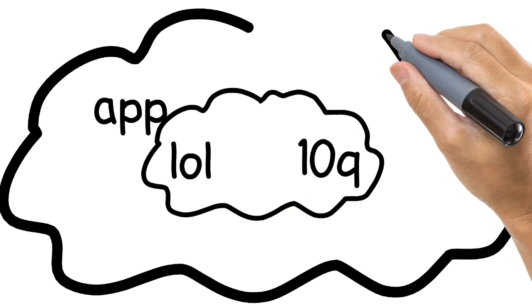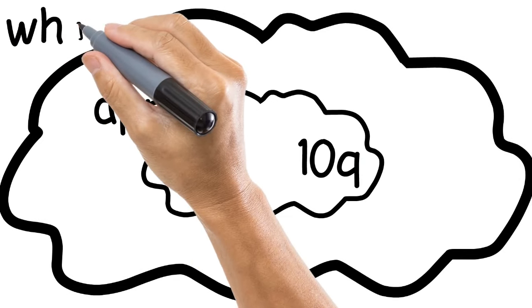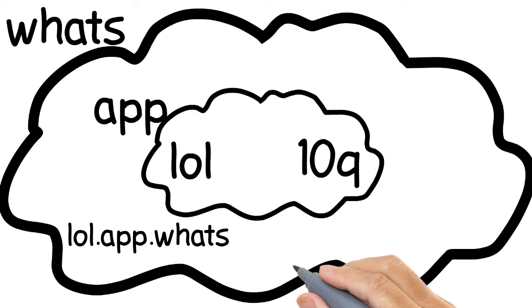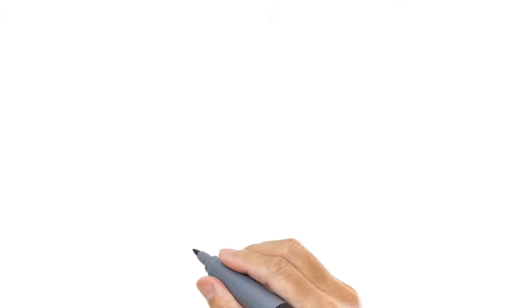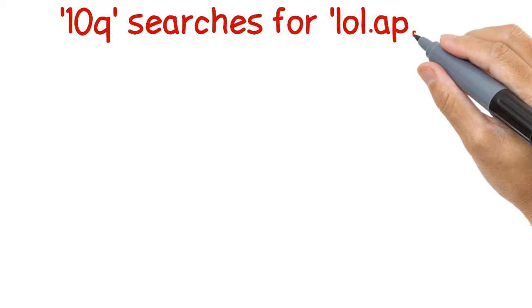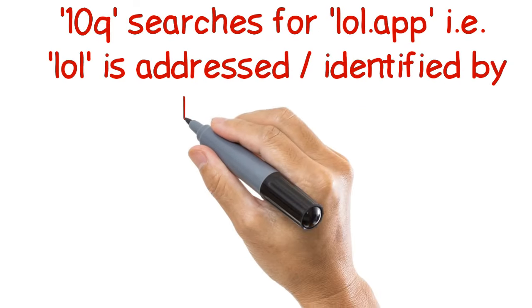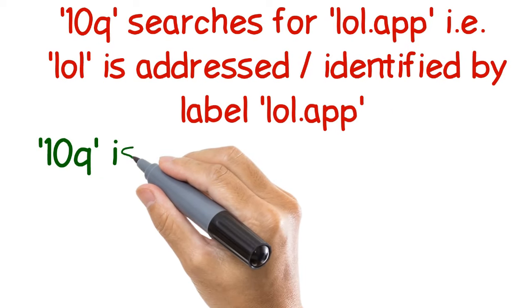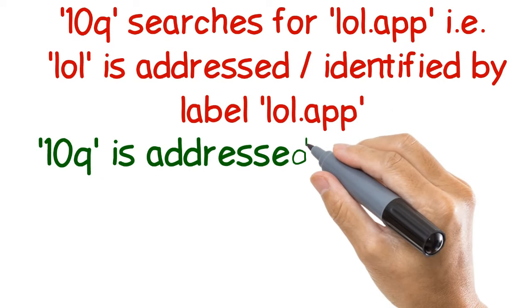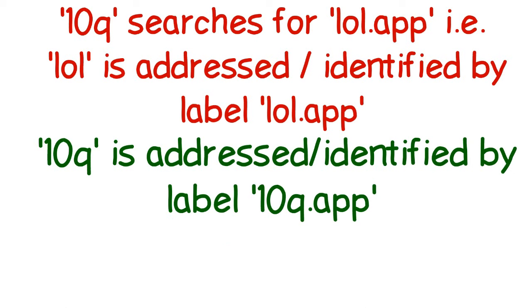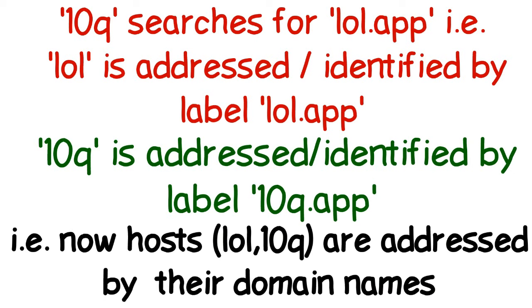Now consider that the network app is further connected to another network named words. So the domain names will be lol.app.words and 10q.app.words. Now, if 10q wants to communicate with lol, then 10q will search for the label lol.app. That is, lol is now addressed or identified by the label lol.app. Similarly, 10q is addressed or identified with the label 10q.app. That is, in the presence of two networks, the hosts are identified by their domain names.